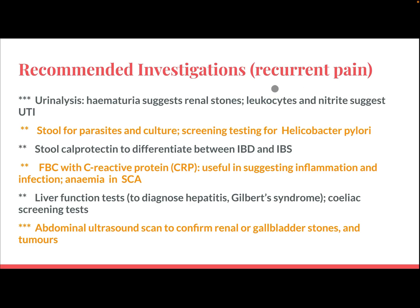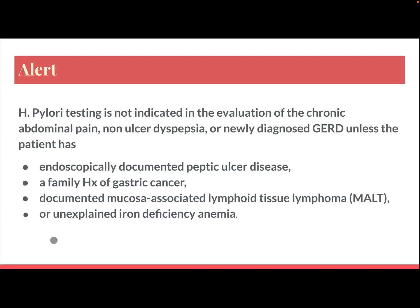Recommended investigations in chronic or recurrent abdominal pain include: urine analysis — hematuria suggests renal stone, leukocytes and nitrates suggest UTI; stool for parasites and culture; screen test for H. pylori; stool calprotectin to differentiate between inflammatory bowel disease and irritable bowel syndrome; full blood count with C-reactive protein to suggest inflammation, infection, or anemia such as sickle cell anemia; liver function test to diagnose hepatitis and Gilbert syndrome; celiac screen test; and abdominal ultrasound scan to confirm renal or gallbladder stones and tumors.